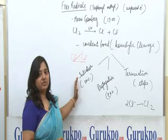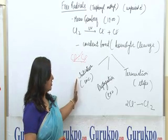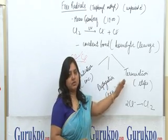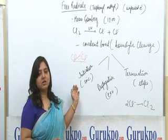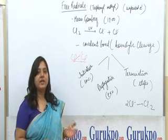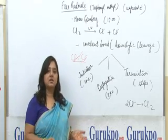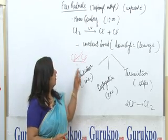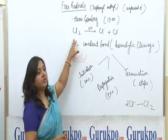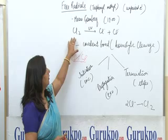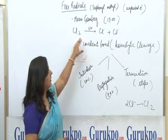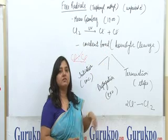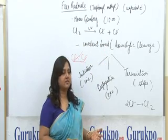This chain process takes place in three steps: initiation, propagation, and termination. The first step is initiation. As the name indicates, initiation means the start — the reaction starts here. As depicted in this example, chlorine gets dissociated into two free radicals. This is chain initiation, meaning the reaction starts at this step.